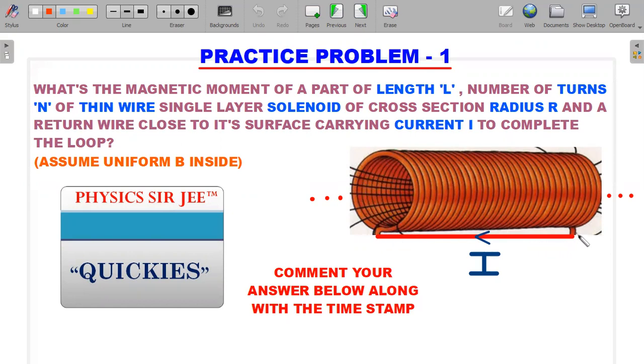We want to calculate the magnetic moment of this. Magnetic moment can only be calculated if there's a closed loop, so to close it out I'll take a return wire here, close to this surface not touching it, and make current go through it. Comment your answer along with the timestamp of the video in the comment section, and I'll reply whether it's correct or not.